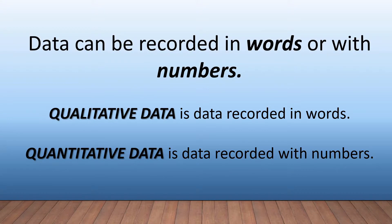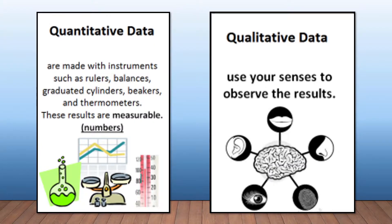Data can be recorded in words or with numbers, so we're going to use some big terms here. Qualitative data is the data that's recorded in words. Quantitative data is data recorded with numbers. So remember: when they talk about qualitative, think words; quantitative, think numbers. With qualitative data, we are using our senses to observe the results — we are listening, we are getting answers, things like that.